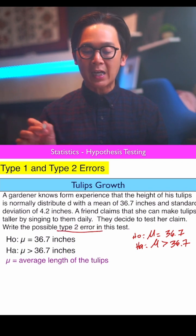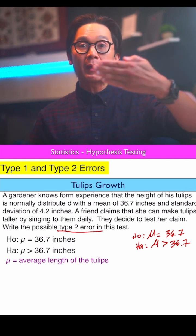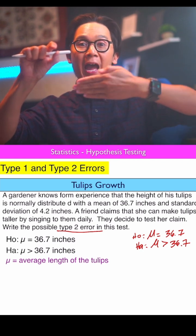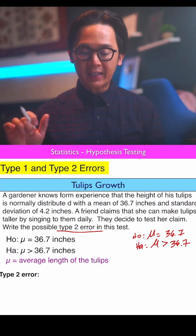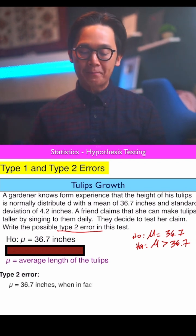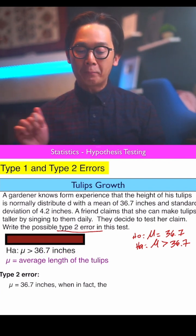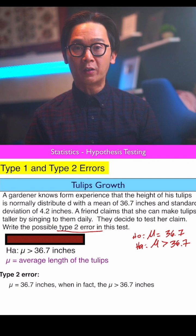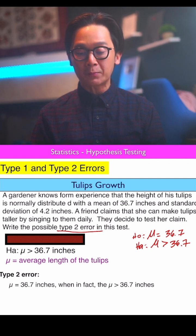Since we are only working on the type 2 error, we cover the alternative hypothesis and write out the null hypothesis first, then uncover the alternative. So the type 2 error is: mu equals 36.7 inches — when in fact — mu is greater than 36.7 inches. Where mu is defined as the average length of the tulips' growth.